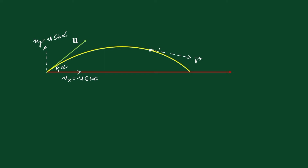We can resolve this velocity vector into two components. In this question, we want to find the time taken for the body to again make the same angle alpha with the horizontal. So taking this angle as alpha, vector v is resolved into v cos alpha and v sin alpha.